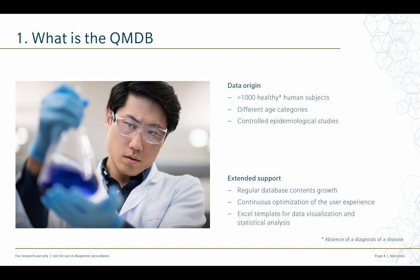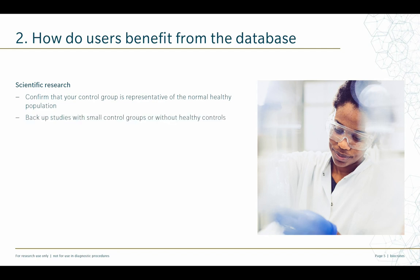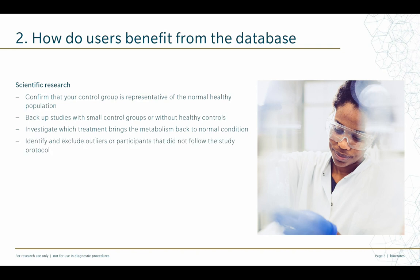We also provide an Excel template to facilitate data visualization and statistical analysis. The QMDB is a great research tool for scientists applying Biocrates technology, as it helps defining normal ranges and supports scientific research. You can confirm that your control group is representative of the normal healthy population, or you can back up studies with small control groups or without healthy controls. For example, you can investigate which treatment brings the metabolism back to normal condition. In intervention or nutrition studies, you can identify and exclude outliers or participants that did not follow the study protocol.